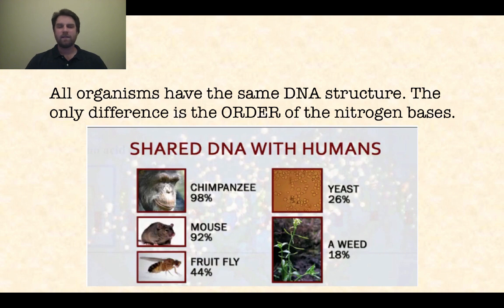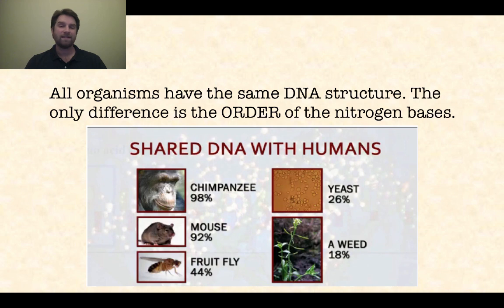All organisms have the same DNA structure; the only difference is the actual order of those nitrogen bases. Humans share a lot of the same DNA with many different organisms — about 98% with chimpanzees, 92% with mice, 44% with fruit flies, and even 18% with a simple weed. That 2% difference takes you from a chimpanzee to a human, so it's very important what those bases do, what order they're in, and thus what proteins they make.